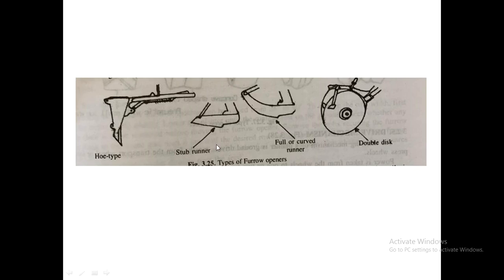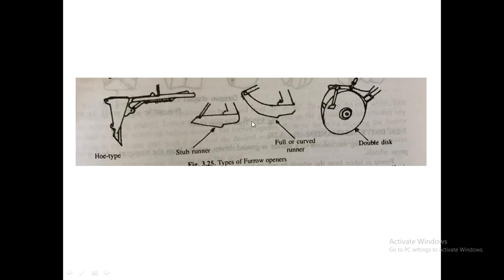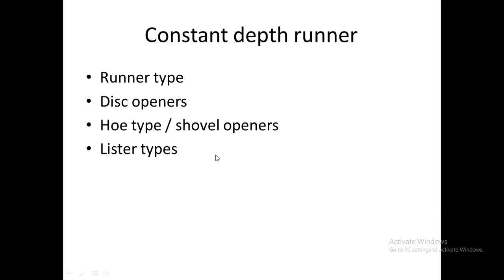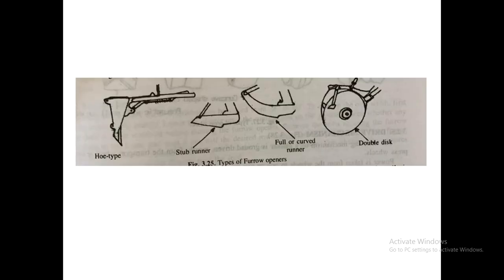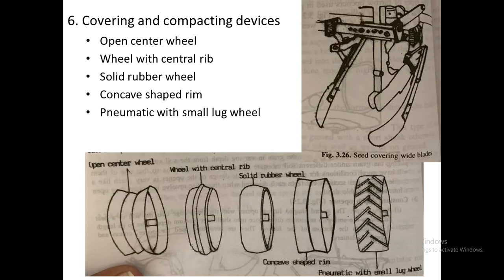The constant depth furrow openers include the hoe type, runner type, and disc type. In the runner type, a flat plate or stubble runner is used for opening furrows. The hoe type uses a sharp blade similar to a handheld hoe. Disc openers — single or double disc — are similar to those in a seed drill. The lister type uses a horizontal plate moving perpendicular to the direction of travel to open up a furrow.